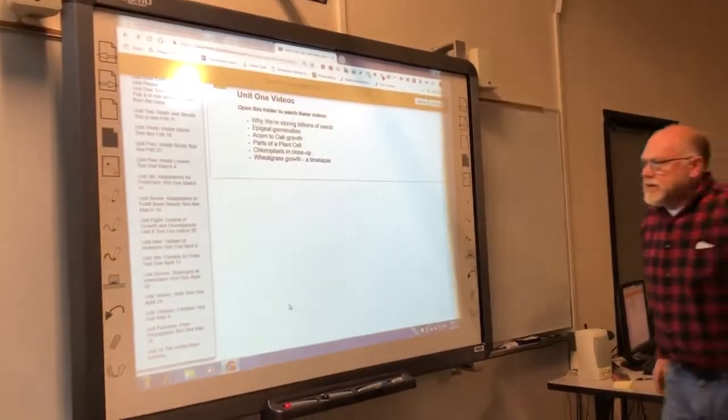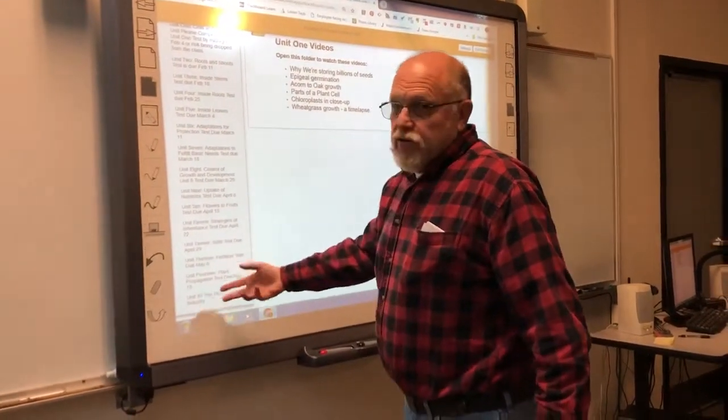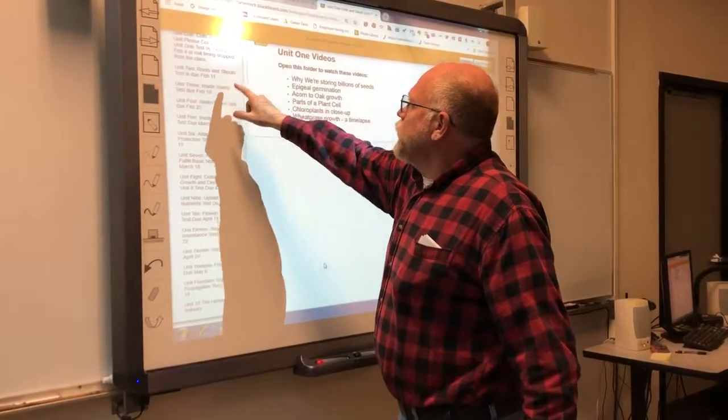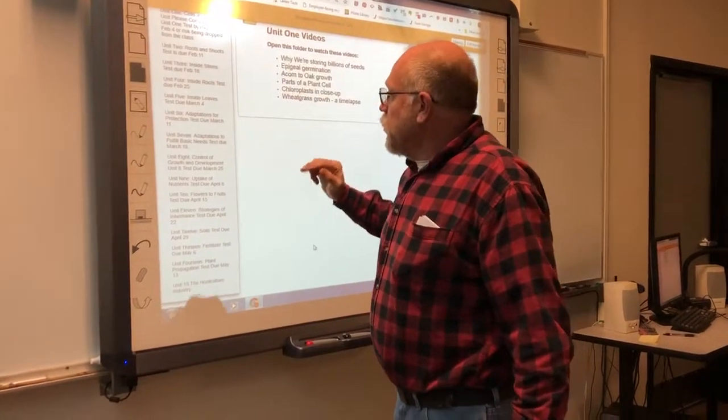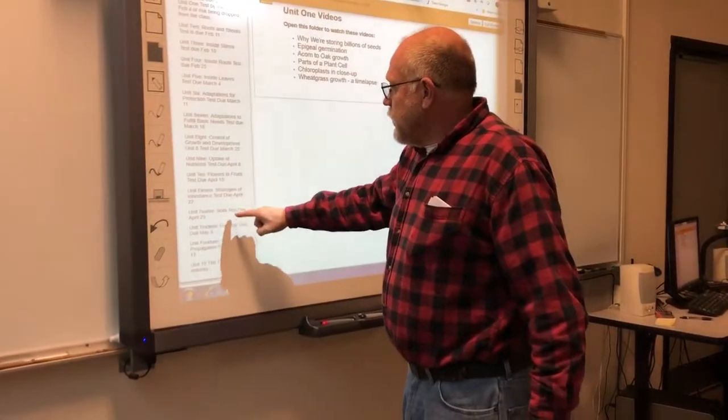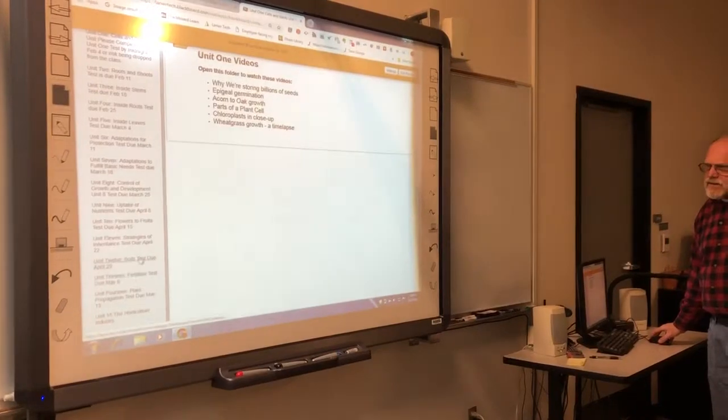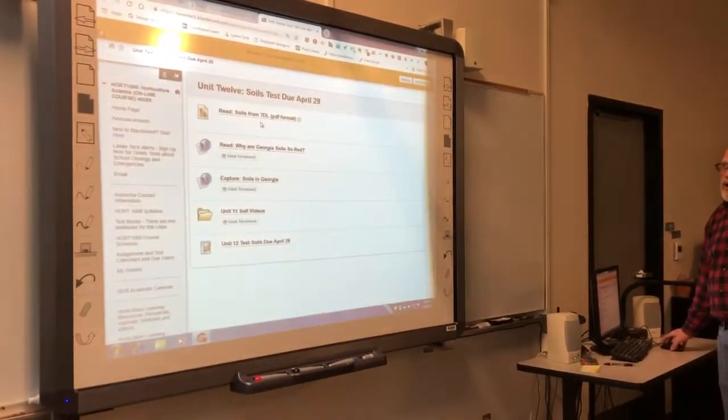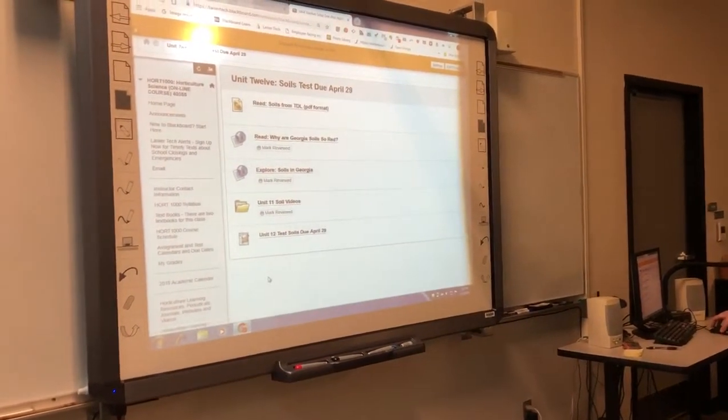As you can see over here, we've got 14 required units. I have an extra unit right here on the horticulture industry, about careers and jobs. And I'll talk about that as the semester goes on. You've got a unit on roots and shoots, cells and seeds, stems, all kinds of different things right here. Now the book, the Botany for Gardeners book, we're using it for units one through 11. After that, soils, fertilizer and propagation, we're not using the book for that, but I've got handouts that are in here. Reading soils from TDL, they're all in PDF formats or it's a website, things like that. And again, here's the test for that. I've got good videos on soils that you can find right there.